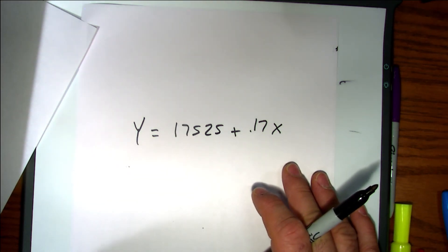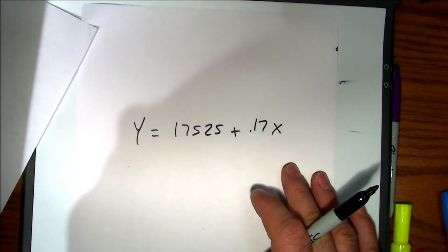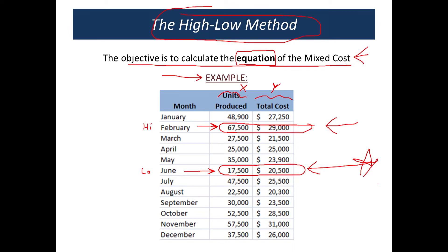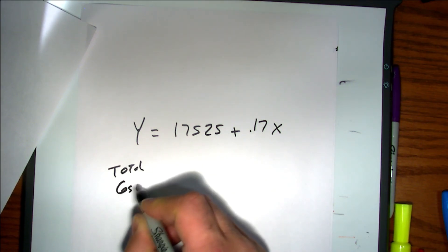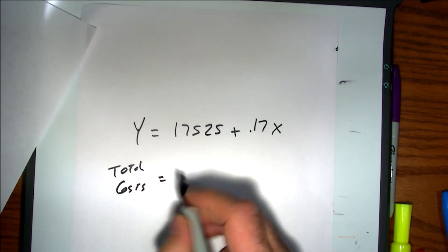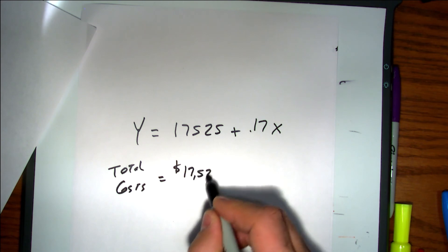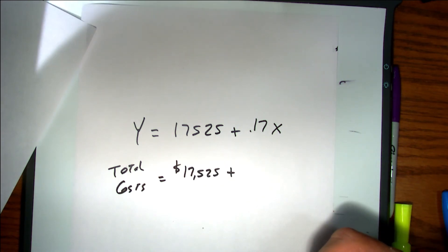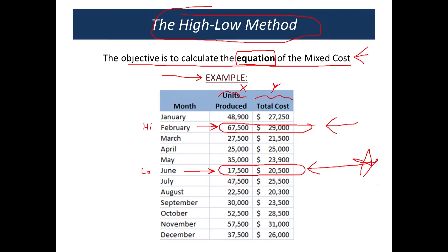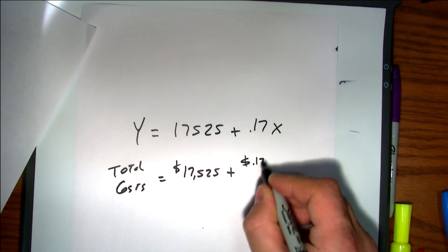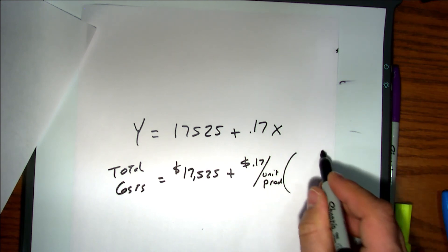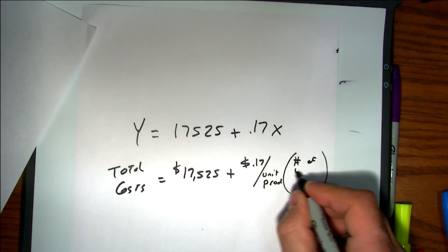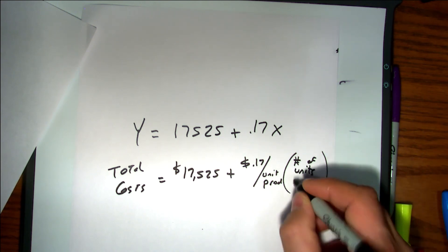What does y equal in this situation? Looking back at the example, y equals total costs. So let's say: total costs equals $17,525 plus 17 cents per unit produced times the number of units produced. That gives you a much better understanding of what we really did.